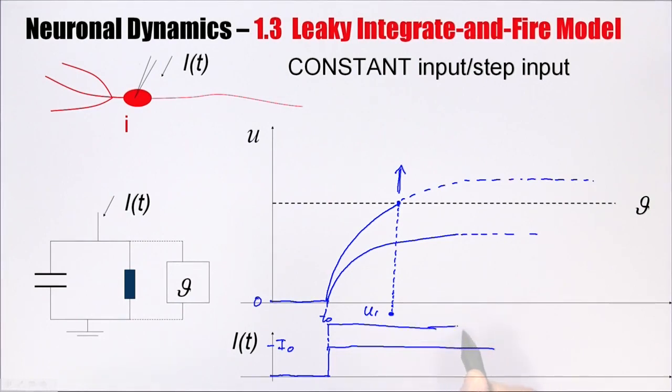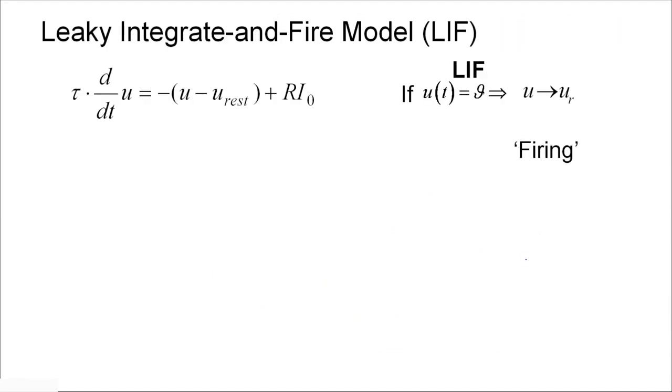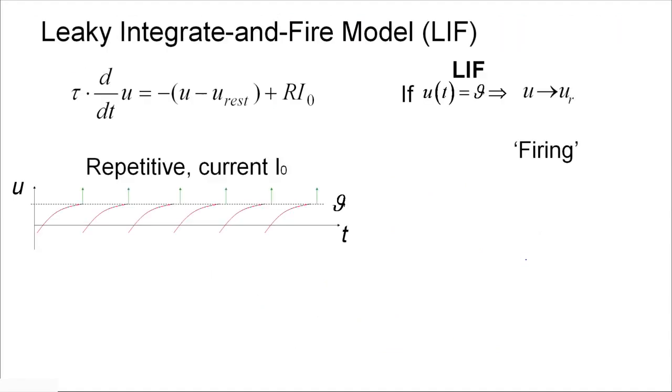It's the same current. The current continues. So the current again tries to approach its stationary value, but again it hits the threshold and it's reset, and again the whole process continues. Thus, for a constant input current, we can expect that this leaky integrate-and-fire model will fire regularly.